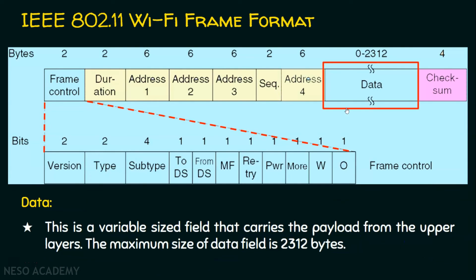The data field is a variable-size field that carries the payload from the upper layers, with a maximum size of 2312 bytes. This is where we get the actual data from the network layer — the packet received from the upper layer. The data link layer encapsulates this packet by appending a header and trailer.